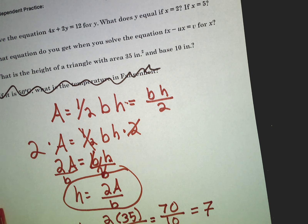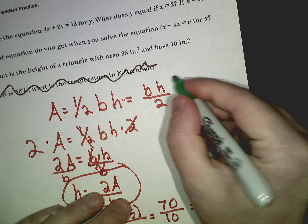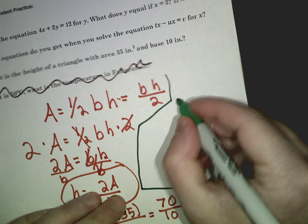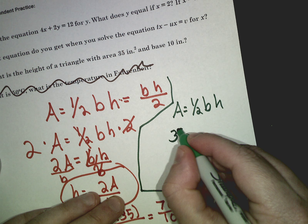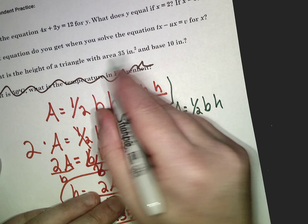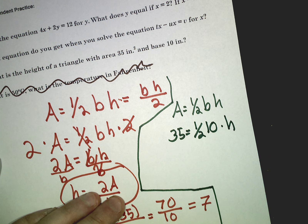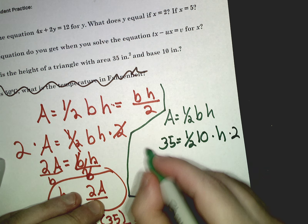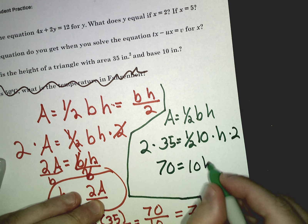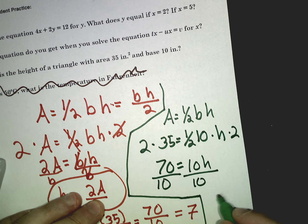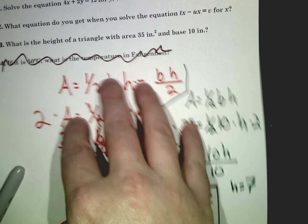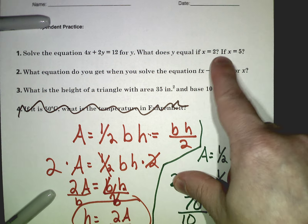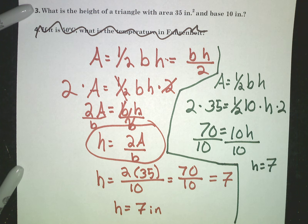Could I have done it by doing the algebra second? Yes, of course. But this is what I would have had to do: A equals one half base times height. Put in the numbers I know — 35 equals one half of 10 times h. You could multiply both sides by 2 to get 70 equals 10h, then divide both sides by 10, and you'll see we get h equals 7 again. The idea here is that you're creating a formula when you don't have the numbers. In this case we had the numbers, but if you don't, you create the formula.